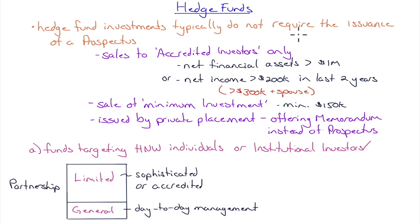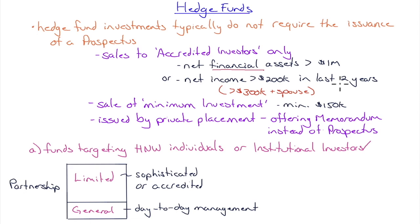Hedge fund investments typically do not require the issuance of a prospectus. The trade-off is they can only accept accredited investors — those with net financial assets greater than one million dollars (financial assets, not total assets) or net income greater than $200,000 in the last two years. If married or part of a family unit, the household income must be greater than $300,000 over the last two years.